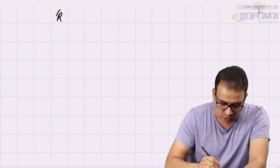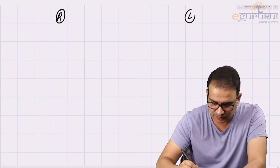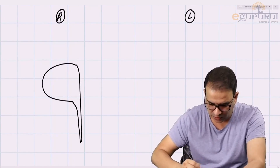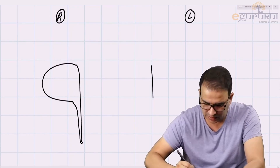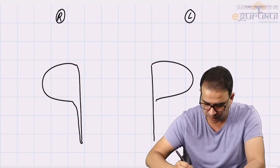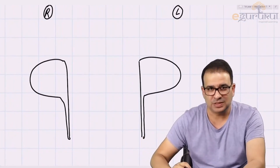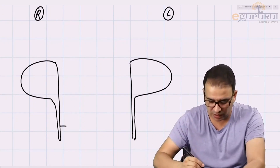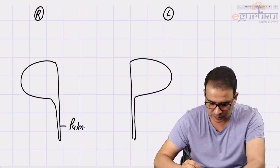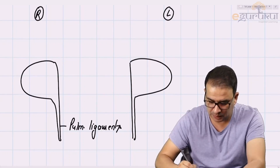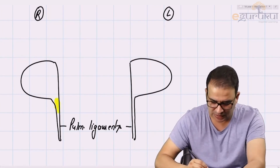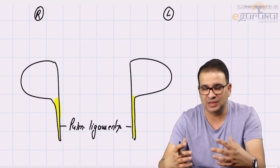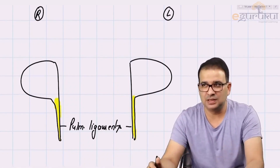Let us see the difference between the right root of the lung and the left root of the lung. In the right root of lung, this is the right root along with its pulmonary ligament, and here is the left root of the lung. These extensions of visceral pleura below the hilum of the lung are called pulmonary ligaments — anatomical dead space which can be utilized by the vessels present in the hilum when there is increased venous return.